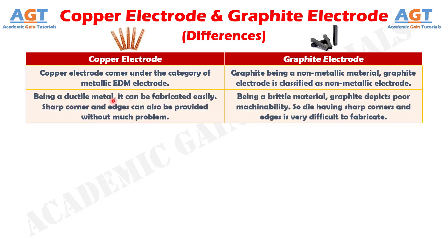Number 2: being a ductile metal, copper electrode can be fabricated easily. Sharp corners and edges can also be provided without much problem. Whereas, being a brittle material, graphite depicts poor machinability, so a die having sharp corners and edges is very difficult to fabricate.